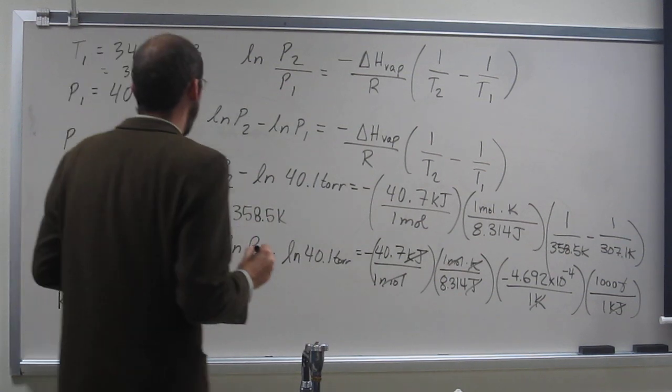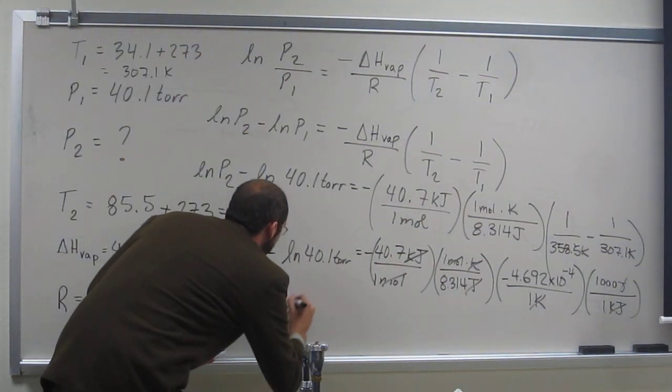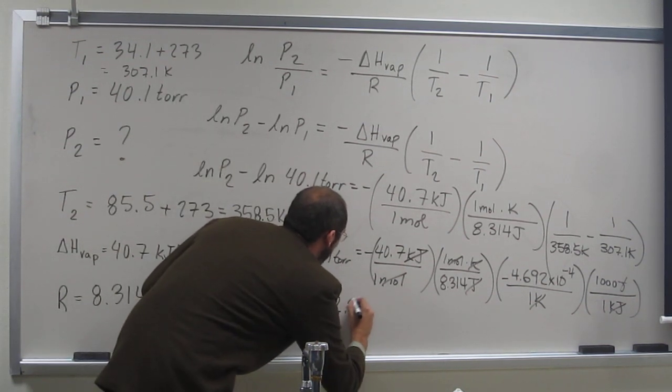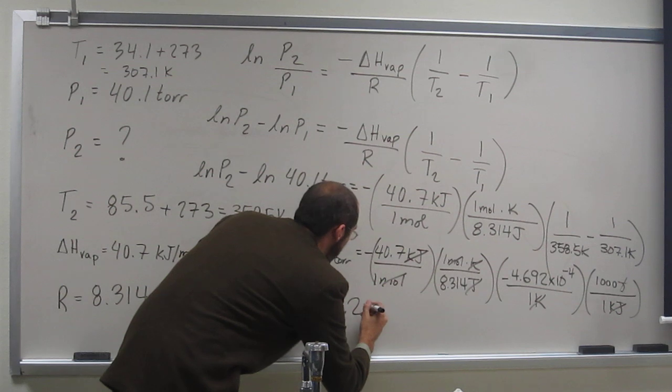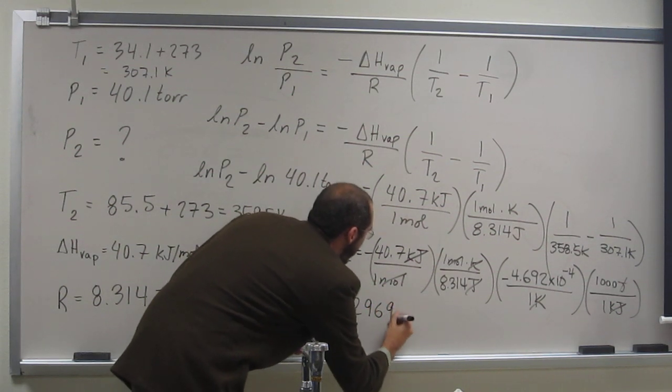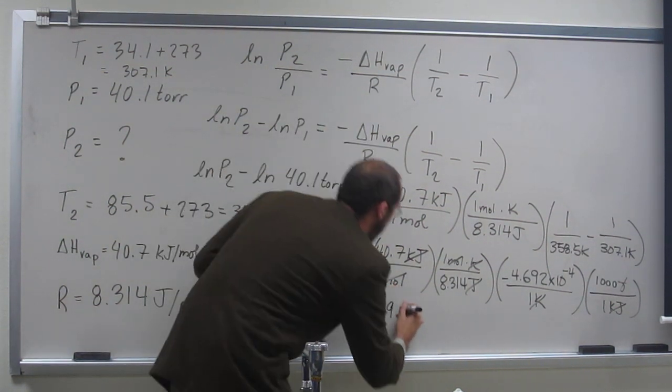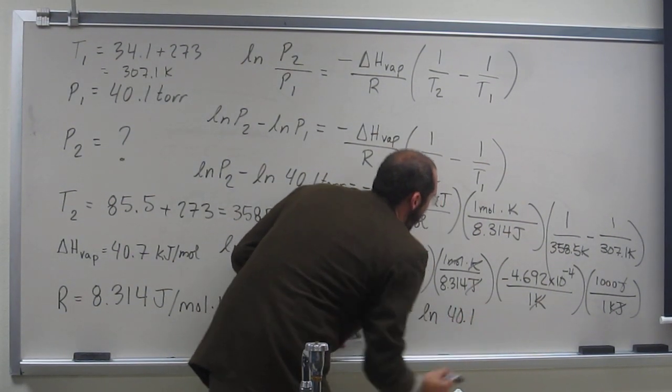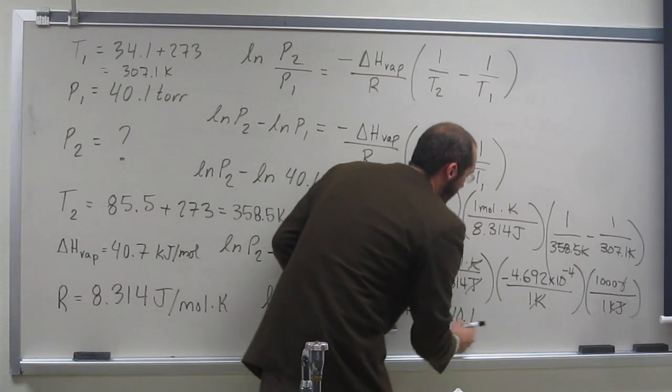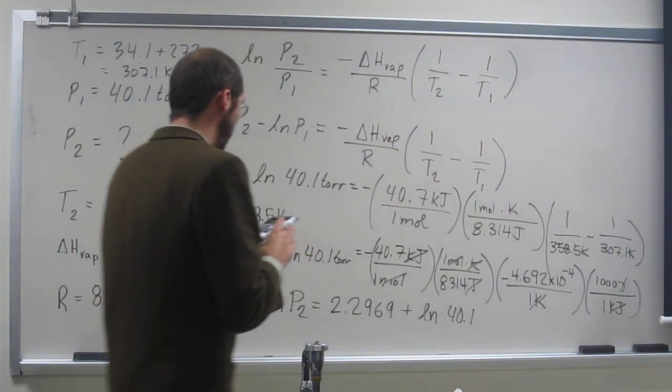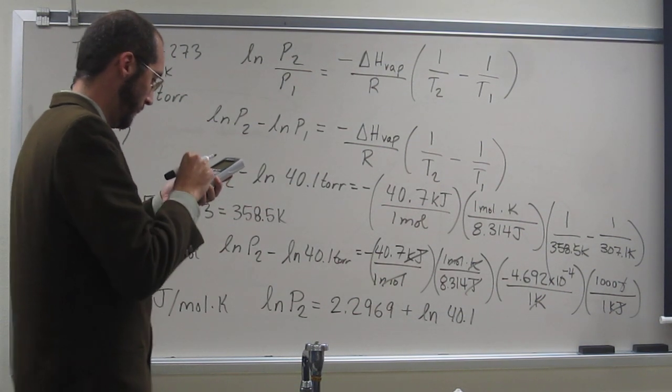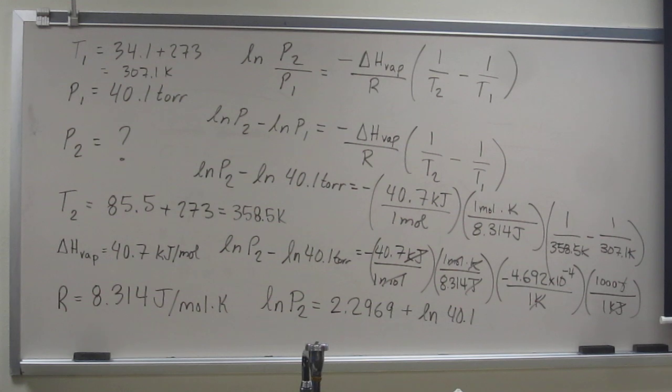Times 1,000 divided by 8.314 times 40.7 times negative 1. So now I get Ln P2 equals 2.2969, we're just going to go out with a bunch of figures, plus the Ln of 40.1. And this torr we're just going to keep off right now.